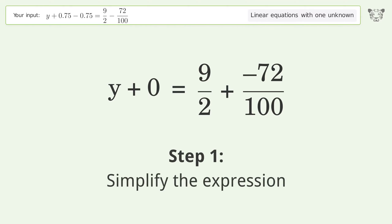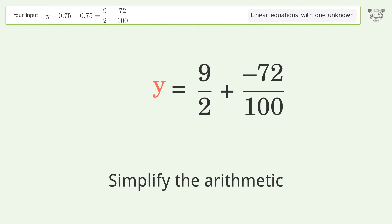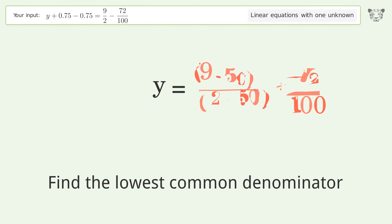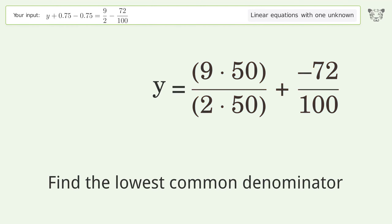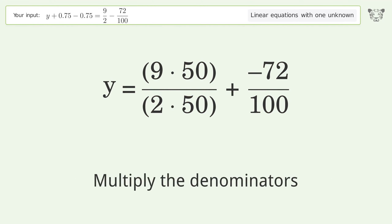Simplify the expression and simplify the arithmetic. Then find the lowest common denominator, and multiply the denominators.